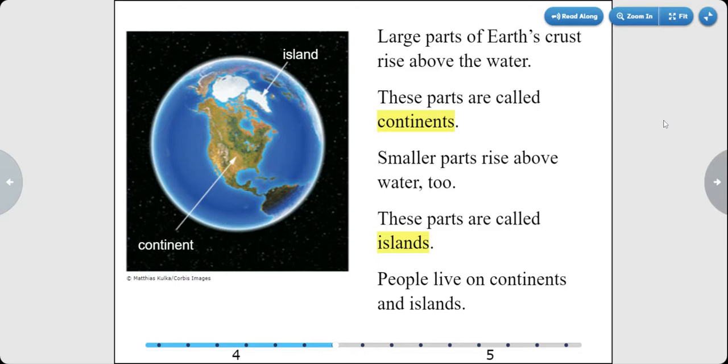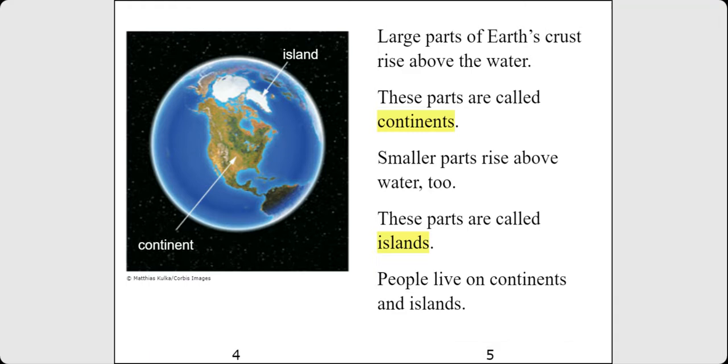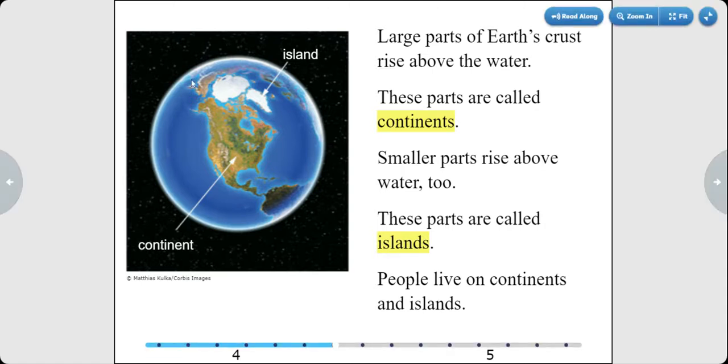Large parts of Earth's crust rise above the water. These parts are called continents. In this picture, you can see an example of a continent. Smaller parts rise above water too, and these parts are called islands. People live on continents and islands.